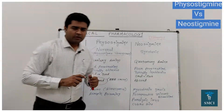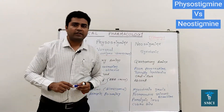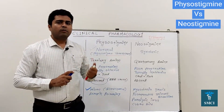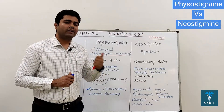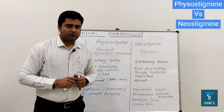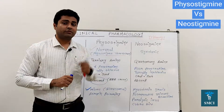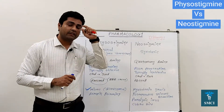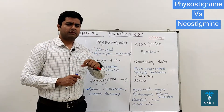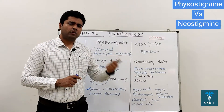Now, where do we use these drugs? If we want to use a drug as a miotic in glaucoma — whether open-angle or angle-closure glaucoma — physostigmine produces miosis. Its penetration is good, so it can be instilled directly onto the eye. One combination is also available: physostigmine plus pilocarpine, which is also used in glaucoma.